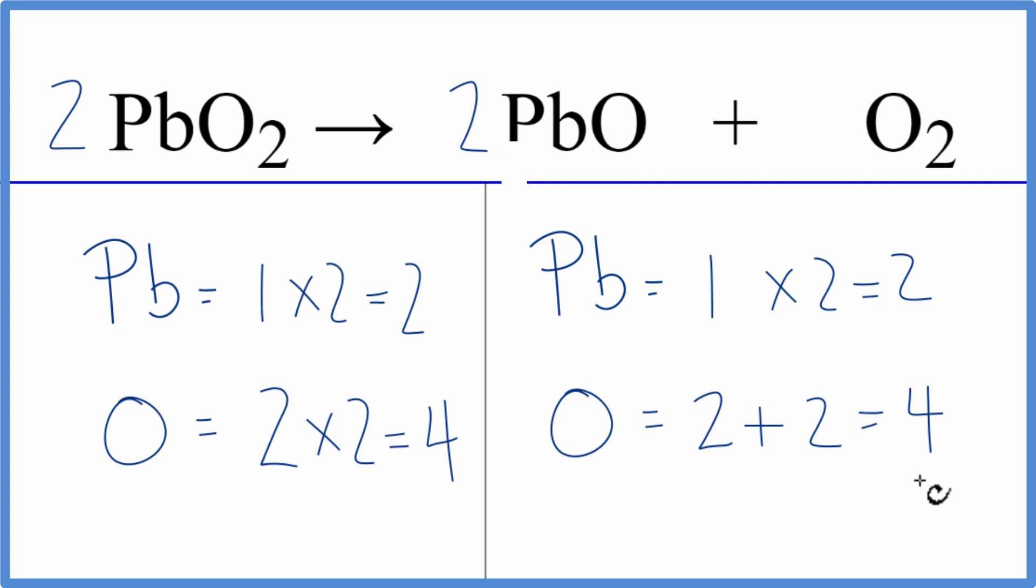So two things: First, make sure you count all the oxygens here on the product side, and then if you have an odd number like we had three, get that to be an even number and that'll make the balancing a lot easier.